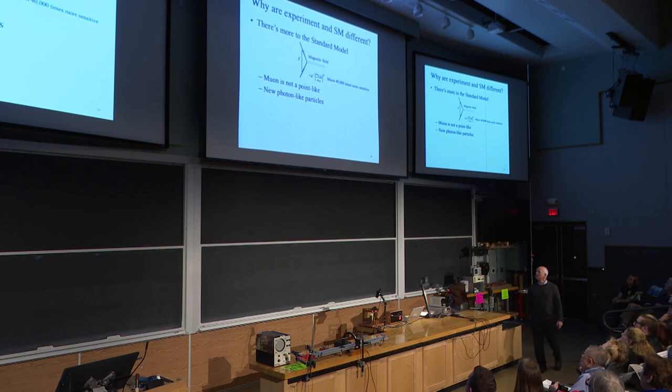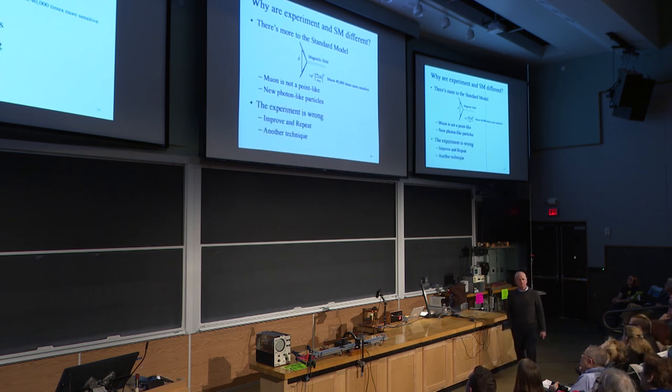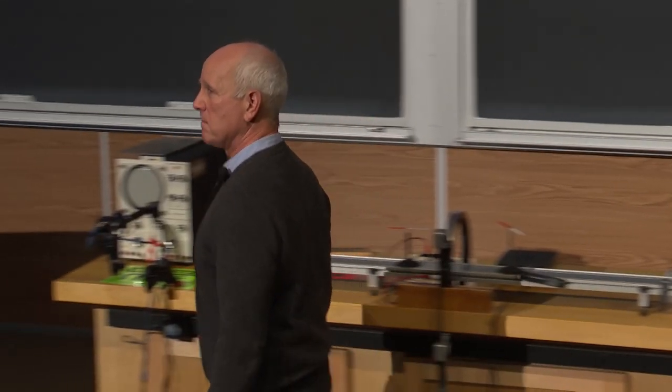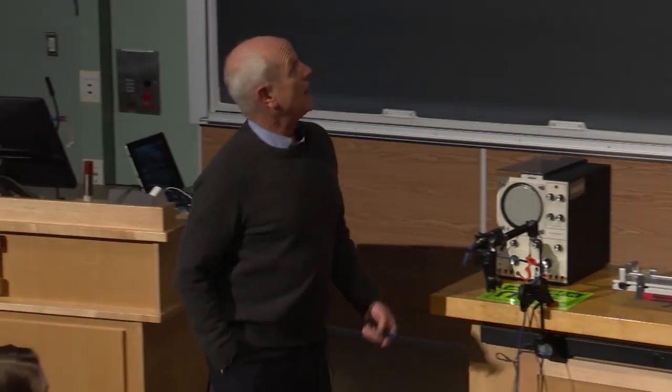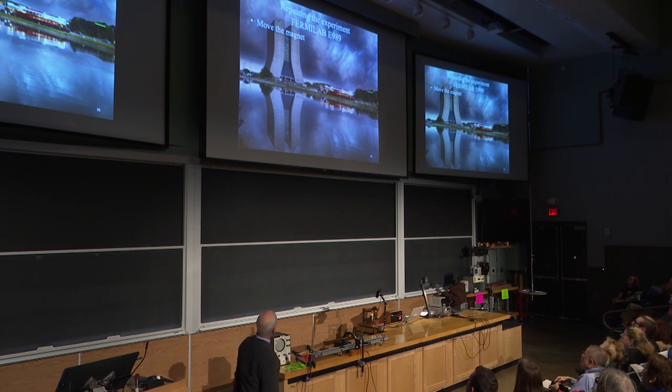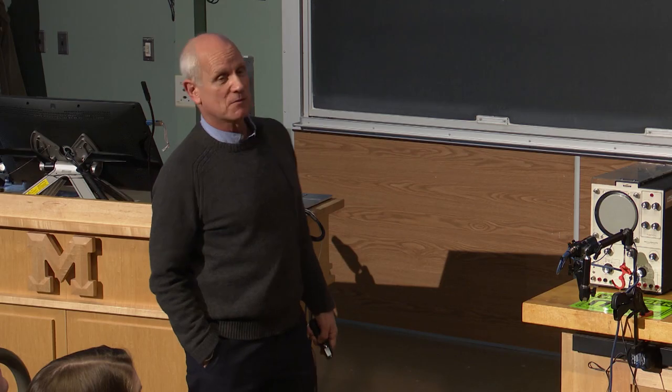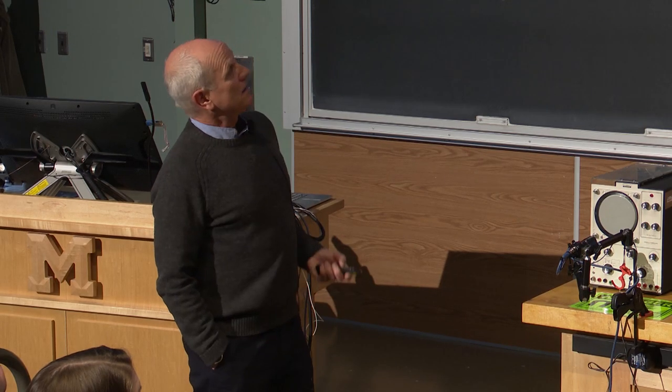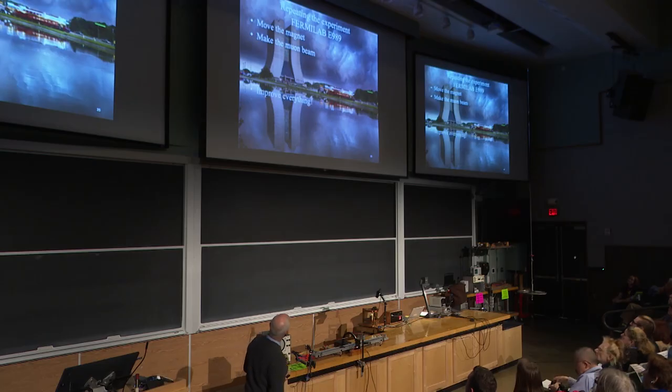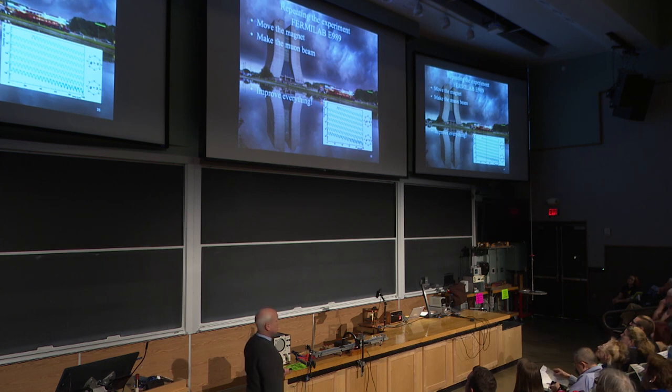So I want to finish up by telling you that we're repeating the experiment at Fermilab. We did this by moving the magnet from Brookhaven to Fermilab. There is the magnet arriving at Fermilab at the iconic Wilson Tower. The founding director of Fermilab was Robert Wilson, and he also was an architect who designed that. His sculptures are awesome. We make a muon beam, which I told you about before. We improve everything and do the experiment again. So that's what we've been doing for the past seven years.